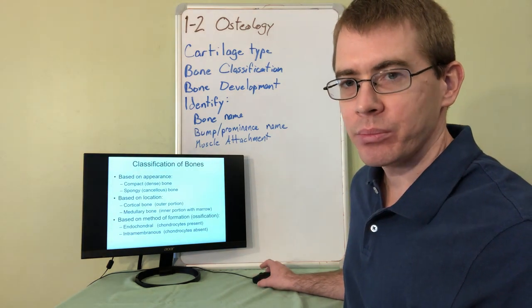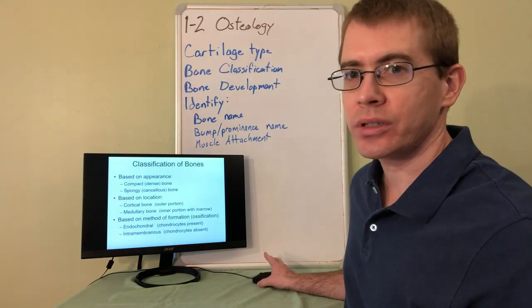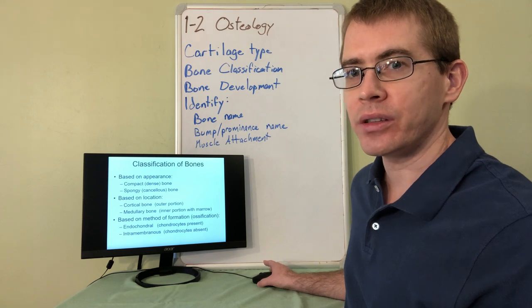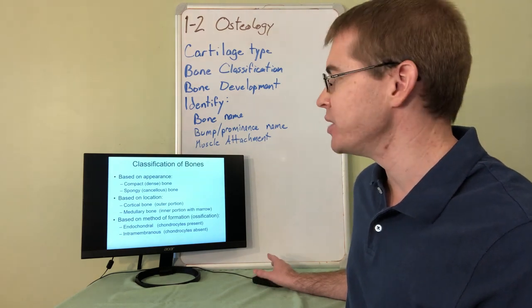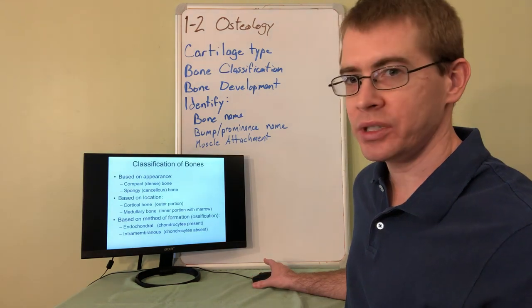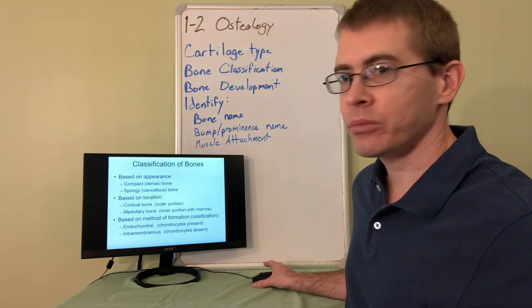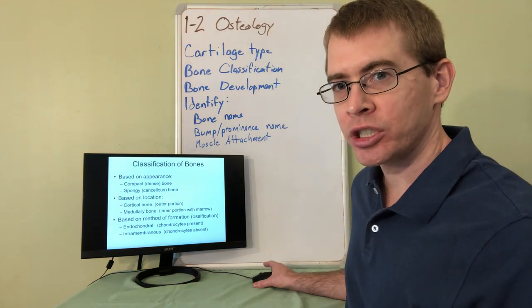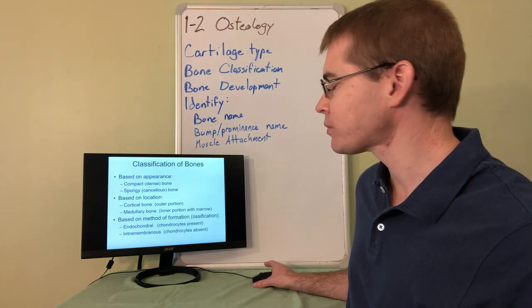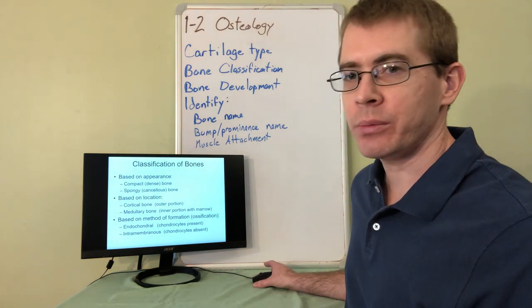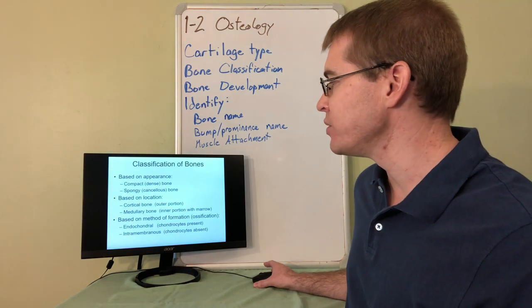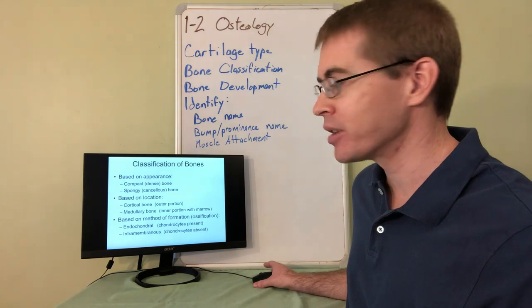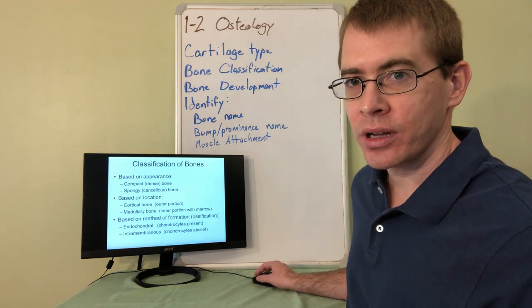So every bone has to have this complex balance of all of these different things. We can classify bones based on many different classification techniques. One that you're probably familiar with is the classification based on its appearance, whether it's spongy bone or dense compact bone. Also based on its location: the medullary bone is the inner portion, whereas the cortical layer of bone is the outer portion. We can also classify bones based on how they were formed. Most bones in the body are formed through the endochondral mechanism, but bones in the skull in particular are formed through the intramembranous mechanism.